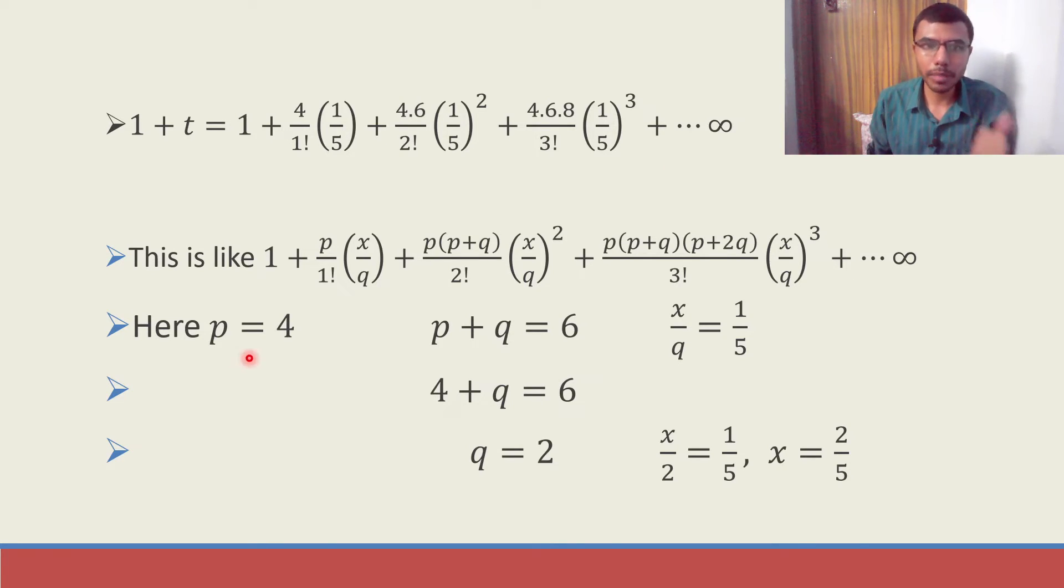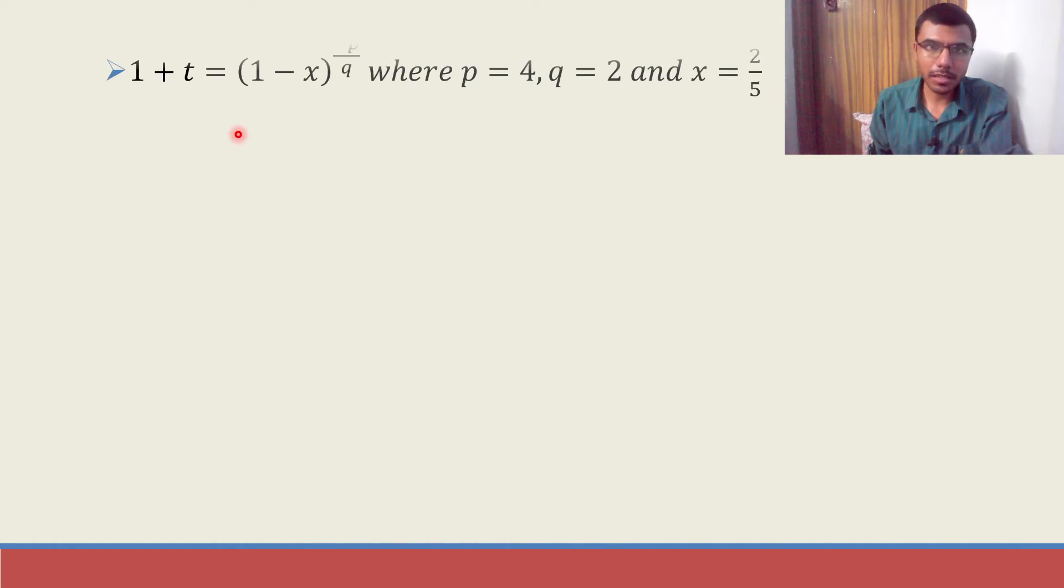But with p, q and x as this. So 1 + t is nothing but (1 - x)^(-p/q) with my p, q and x as here. Now just substitute them here.